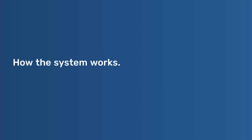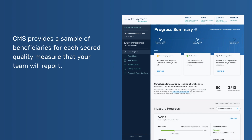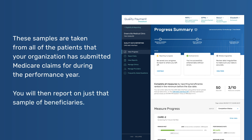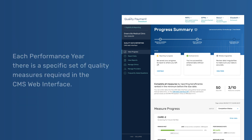How the system works: CMS provides a sample of beneficiaries for each scored quality measure that your team will report. These samples are taken from all of the patients that your organization has submitted Medicare claims for during the performance year. You will then report on just that sample of beneficiaries. Each performance year, there is a specific set of quality measures required in the CMS Web Interface.